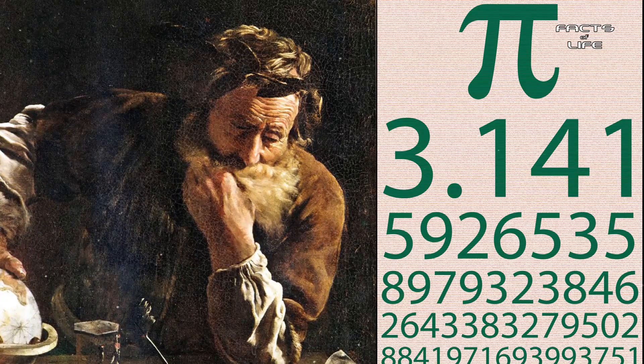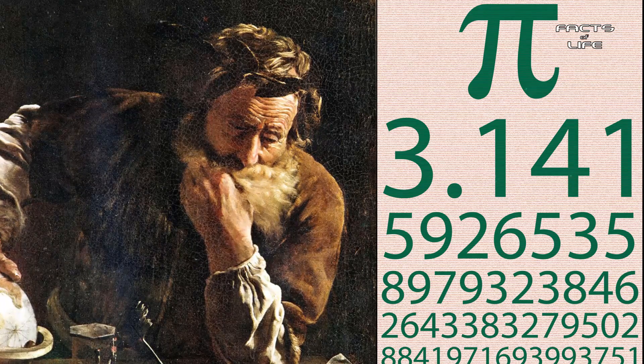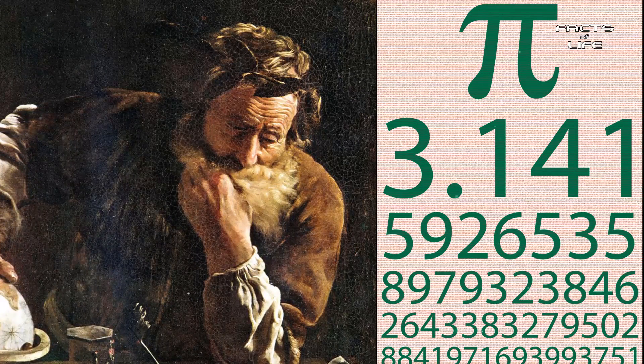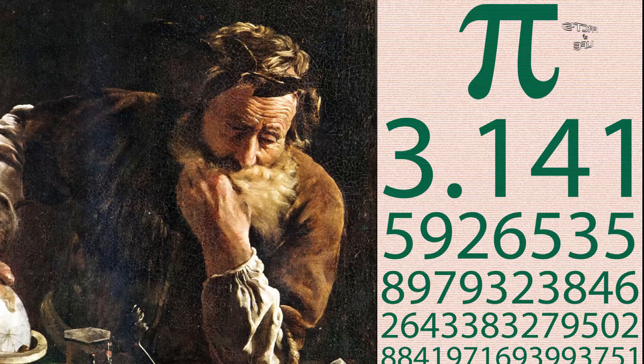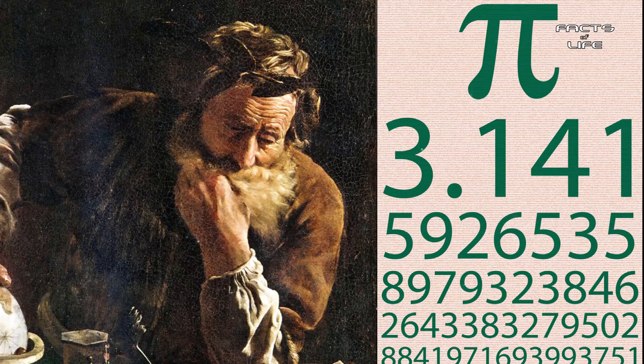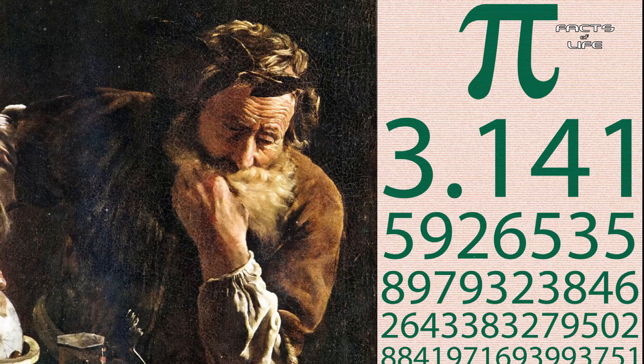The two polygons therefore provided the upper and lower bounds for the area of a circle, allowing Archimedes to approximate that the missing piece of the puzzle, Pi, lay somewhere between 3 1/7 and 3 10/71.